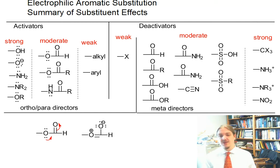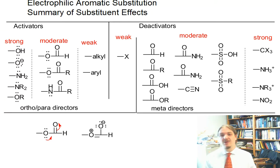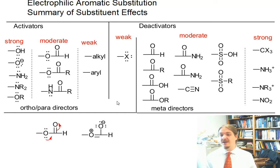Next come the halogens, which can donate by resonance and withdraw by induction — just like the strong activators — but here induction wins, so they are deactivators. They reduce the overall electron density in the ring, but because they have lone pairs, they can donate electron density by resonance and stabilize the intermediates leading to ortho and para products.